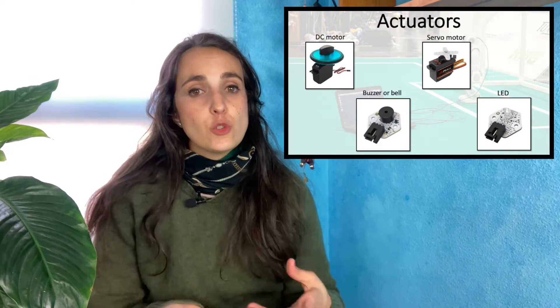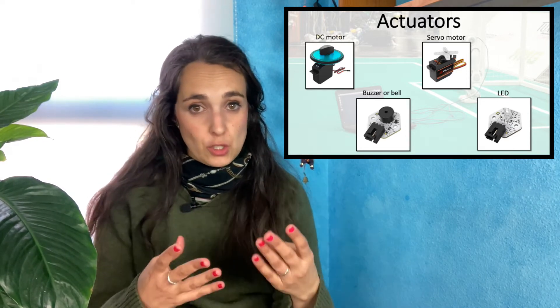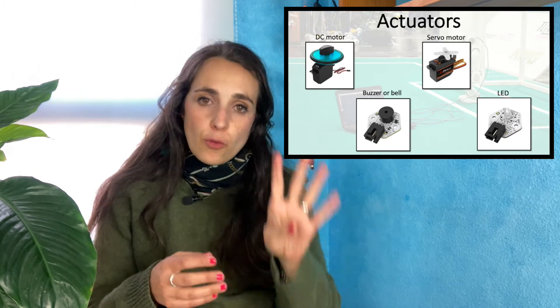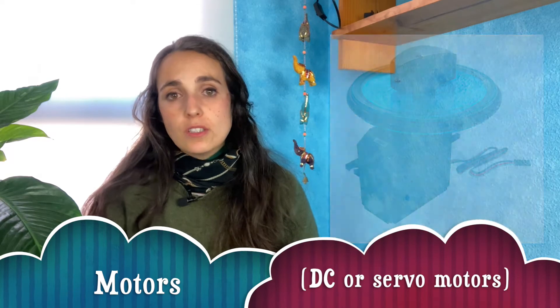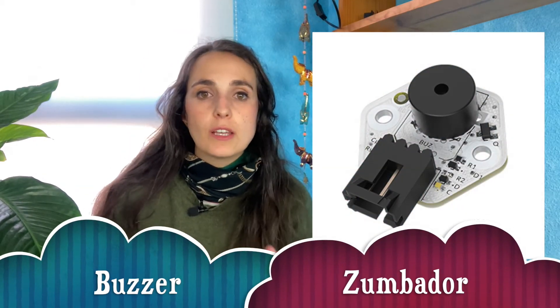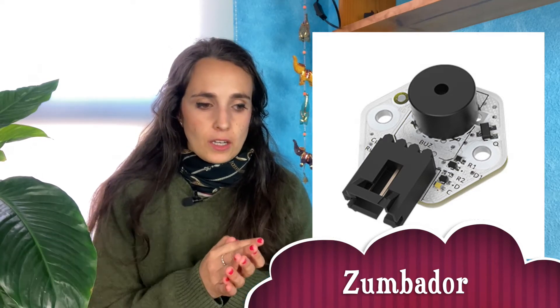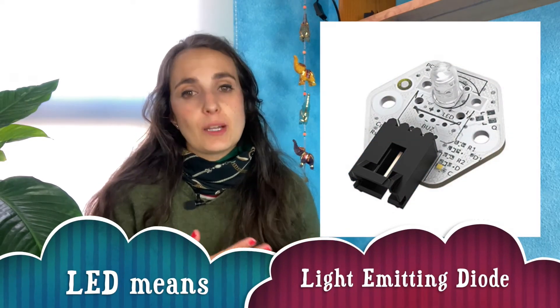On the other hand we have actuators. Actuators are the ones that perform actions sent from the motherboard depending on the environment and the sensors. We have four main types of actuators: first, motors — they could be DC motors or servo motors that we learned about in a previous video — they are actuators because they move in response to a signal from the motherboard. Then we have buzzers or bells that can emit sound. Imagine being in an elevator, pushing a button, going to the third floor, and hearing a ring when the doors open — that is this type of actuator.